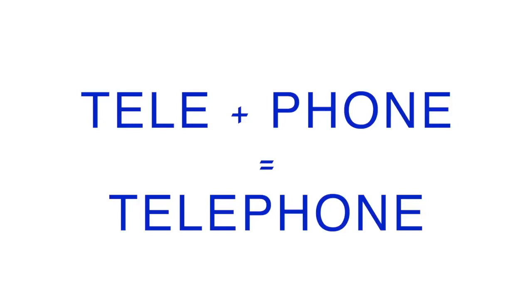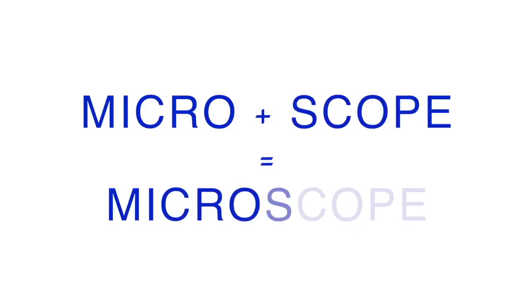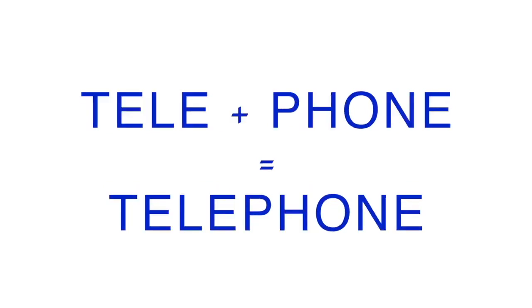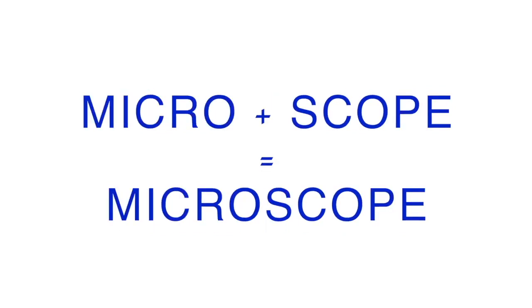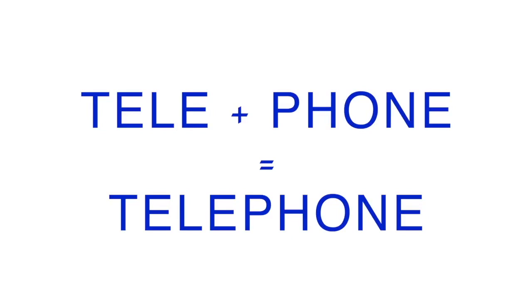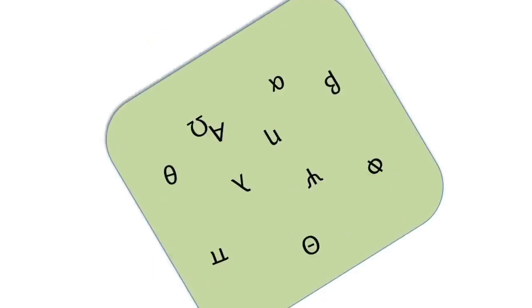Also, two Greek words are put together to make microscope — the roots micro and scope. Tele means far distant and phone means sound, so telephone means sound from a distance. Micro means small and scope means see, put together to mean seeing small things. There were not words for telephone or microscope before their invention, and two Greek roots were combined to describe each invention.